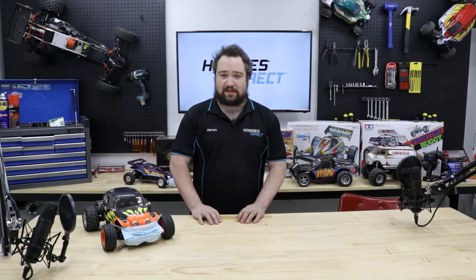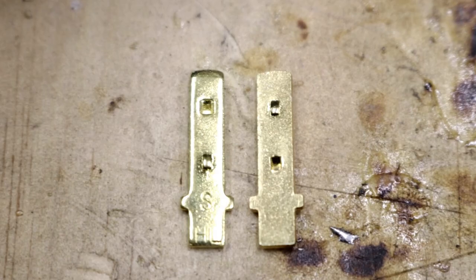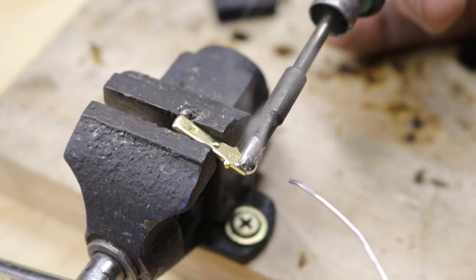This is especially true for Traxxas-style connectors, as if you go past the tab on the contact, they simply won't go properly into the housing. This is also why I like to have the contact sloping down at about a 30-degree angle in the vise. It stops the solder from spreading too far up. Whether you're doing an ESC or battery connector will dictate what side of the contact tab you're soldering your wires onto.